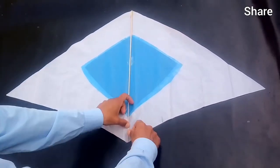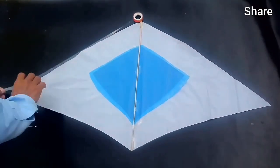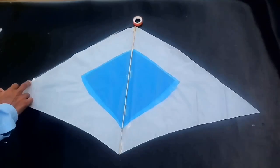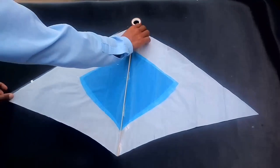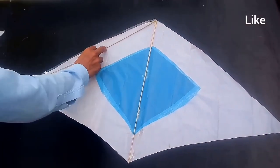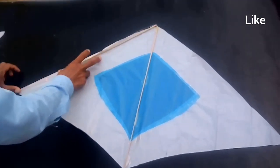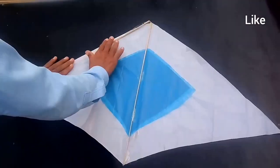On another side, we are jointing the tape. We will joint the bumble stick on one side, the upper side of the kite. We are jointing the bumble stick now.